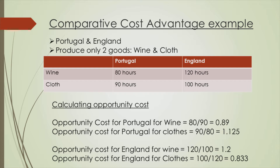In this example, Portugal has absolute advantage over England in both goods. It can produce both wine and cloth more efficiently than England. So does that mean Portugal should produce both goods?